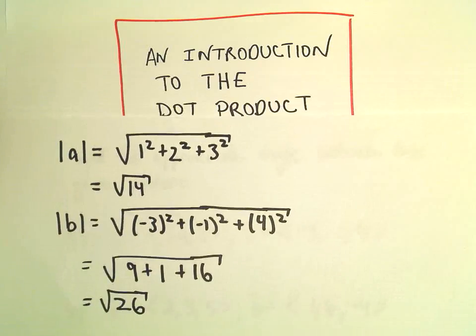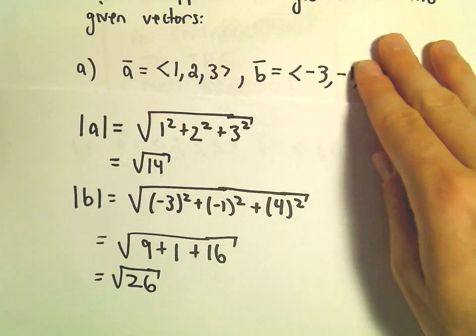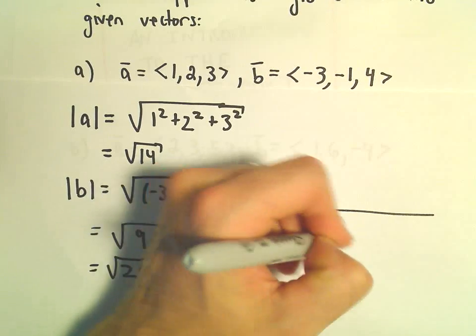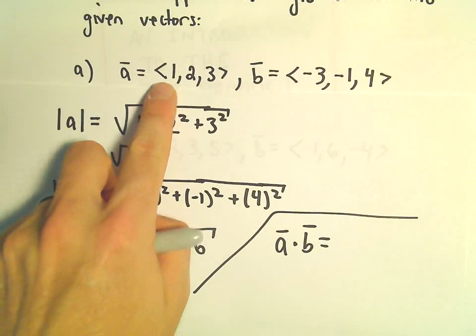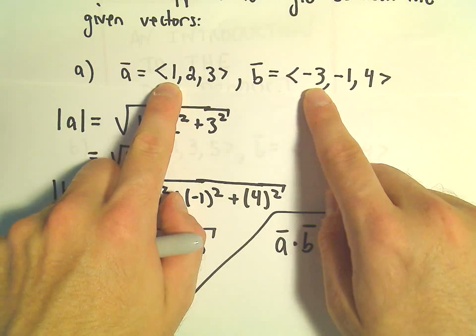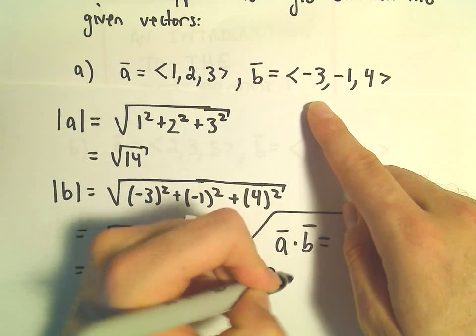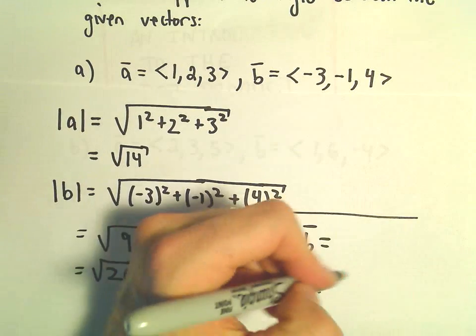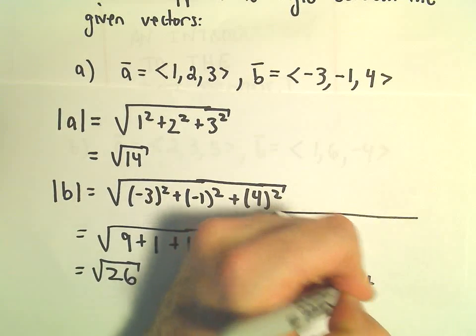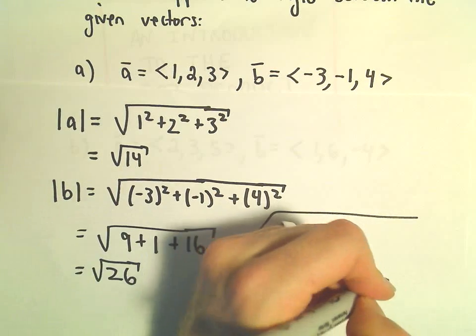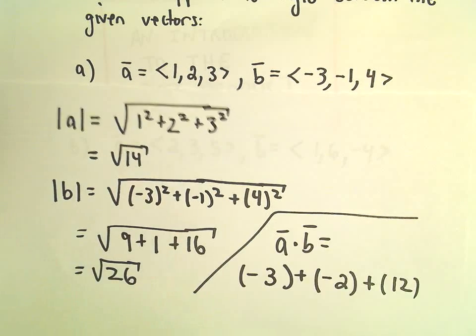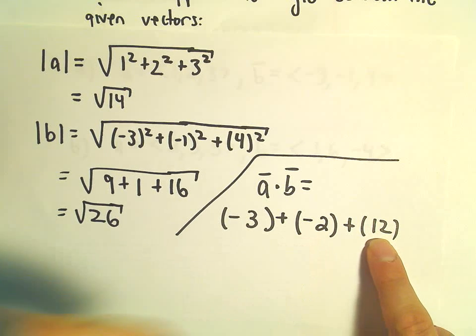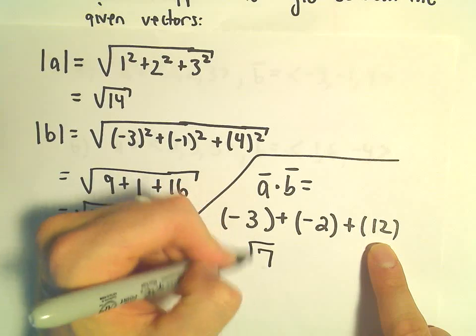Now we also have to figure out the dot product, a dot b. So to do the dot product, recall we just multiply respective components. So we'll get 1 times negative 3, which is going to be negative 3, plus we'll do 2 times negative 1, which is going to be negative 2, plus, and then we'll multiply 3 times 4, which is going to be 12. So negative 3 plus negative 2 is negative 5. Negative 5 plus 12 is going to give us positive 7.